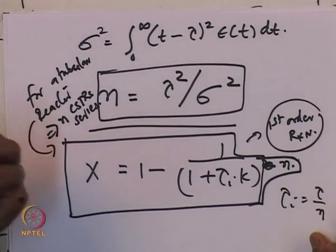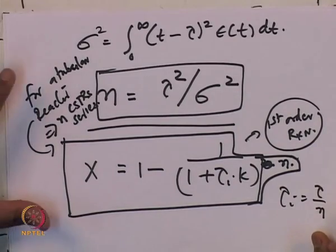We will solve some examples as we go ahead, but before that let us look at the dispersion model. This is where I stop as far as the tanks-in-series model is concerned. Once you get n, you get a value of conversion for a given reaction in a tubular reactor. Now let us go ahead and discuss the other model: the dispersion model.